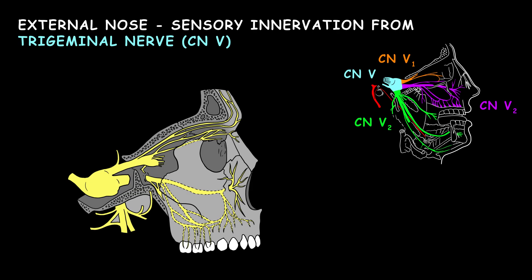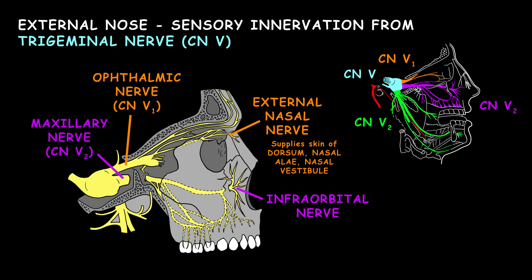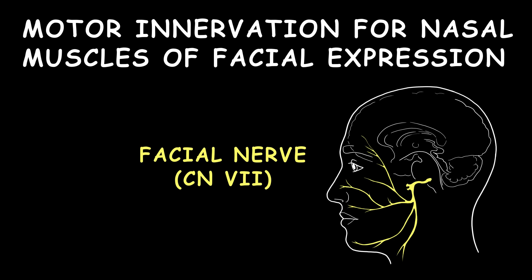The external nose receives sensory innervation from the trigeminal nerve. The external nasal nerve is a branch of the ophthalmic nerve that supplies the skin of the dorsum, nasal alae, and nasal vestibule. The infraorbital nerve is a branch of the maxillary nerve, which supplies the lateral aspects of the nose. Motor innervation for the nasal muscles of facial expression is supplied by the facial nerve.